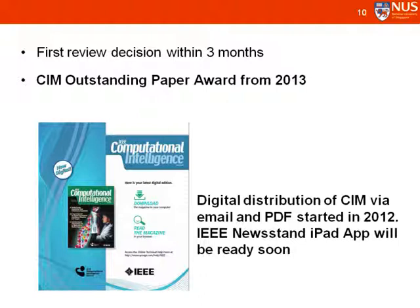We also have digital distribution of the CIS magazine via email and PDF, started with the February 2012 issue. So if you are a member of the society, you should expect to receive an email with a hyperlink to download the PDF of the entire magazine, which you can read on your mobile devices. We are also currently working to bring the IEEE digital newsstand app to the magazine, and hopefully it will be ready by the end of the year.